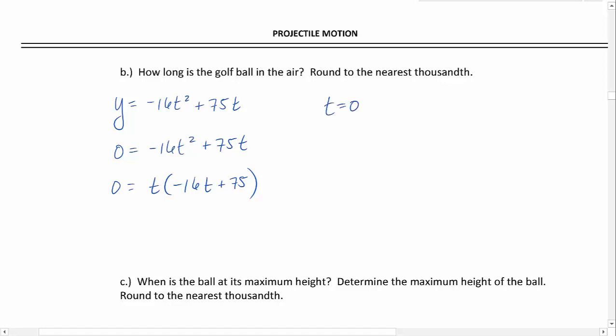Negative 16 t plus 75 equals 0. Solving for t, we get t to be 75 over 16. Now we need to decide which one of these answers makes sense for the context of our application. The question is, how long is the ball in the air? When t equals 0, we haven't hit the ball yet, so that can't possibly be the answer. Our other answer is t equals 75 over 16. That's a positive answer for time, so that makes sense for the context. We just need to round it to the nearest thousandth. We get t to be 4.69 seconds.